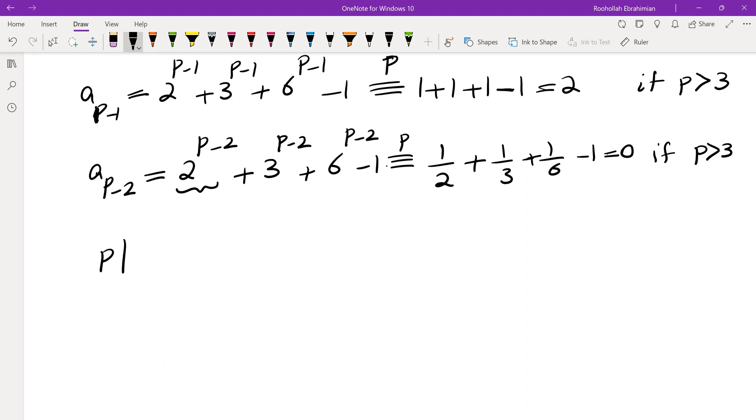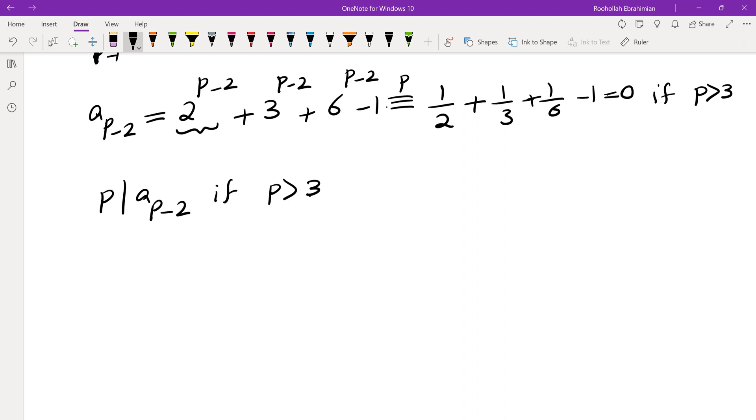It means p divides a_(p-2) if p is greater than 3. And we know that for p equals 2 and p equals 3, we also have terms that are divisible by 2 and 3. Therefore, there is no prime that is relatively prime to all terms of this sequence. So the answer is 1.